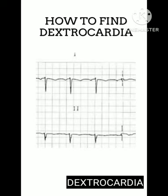An important thing to remember is that when you find dextrocardia, a clear annotation on the recording should be given to describe the repositioned electrodes — for example, V3R, V4R, V5R, V6R.